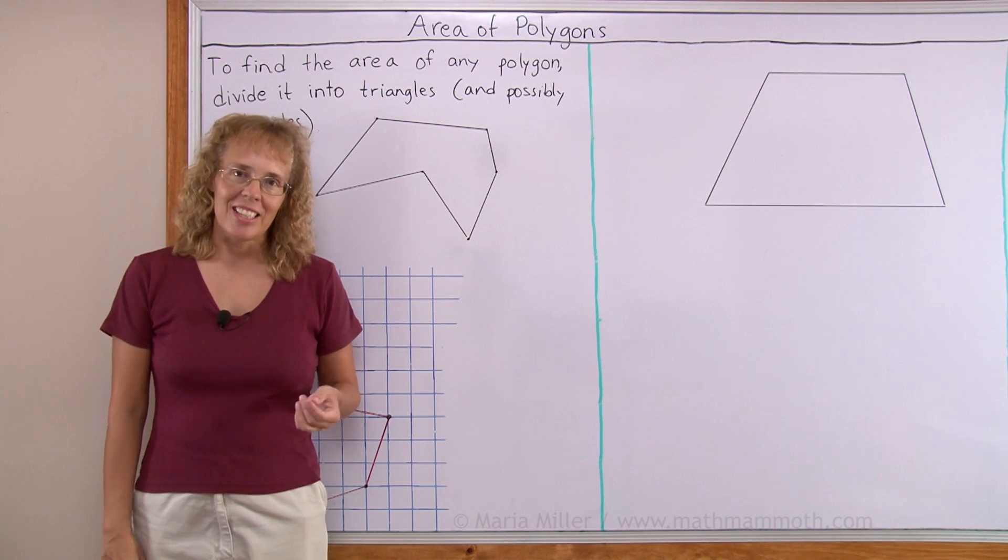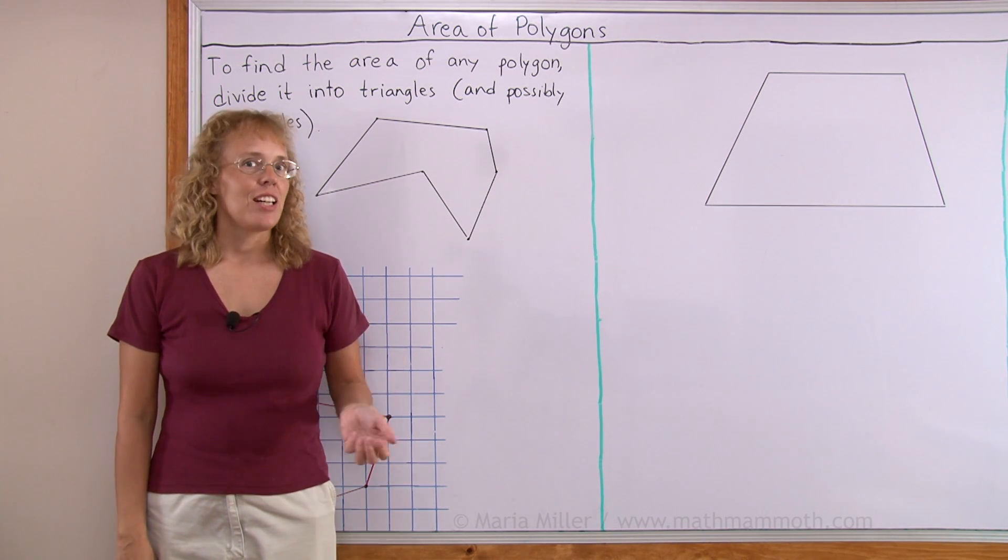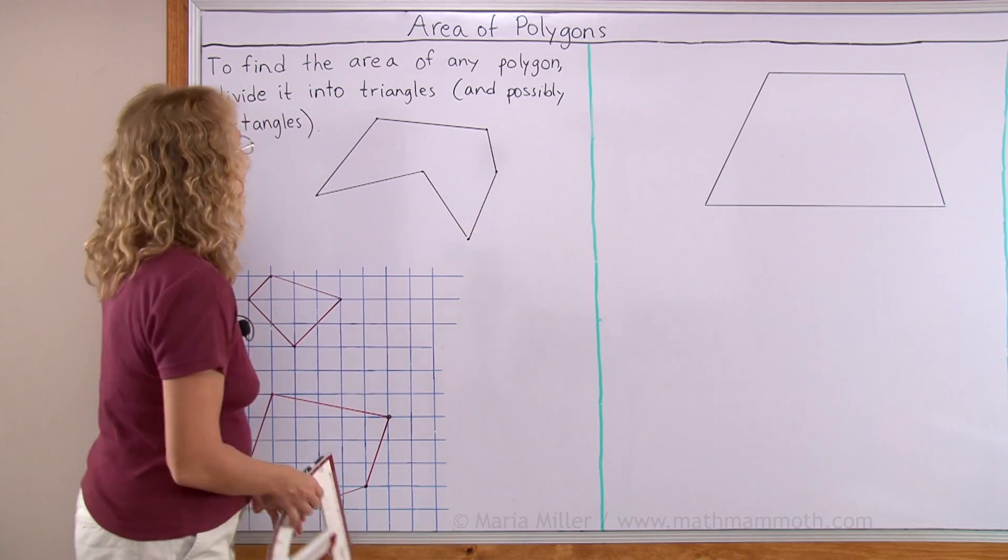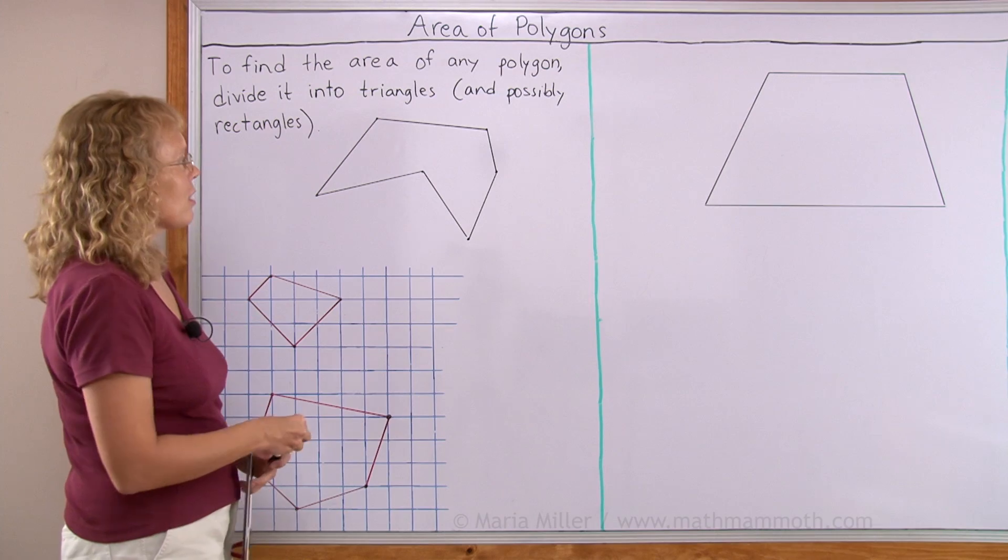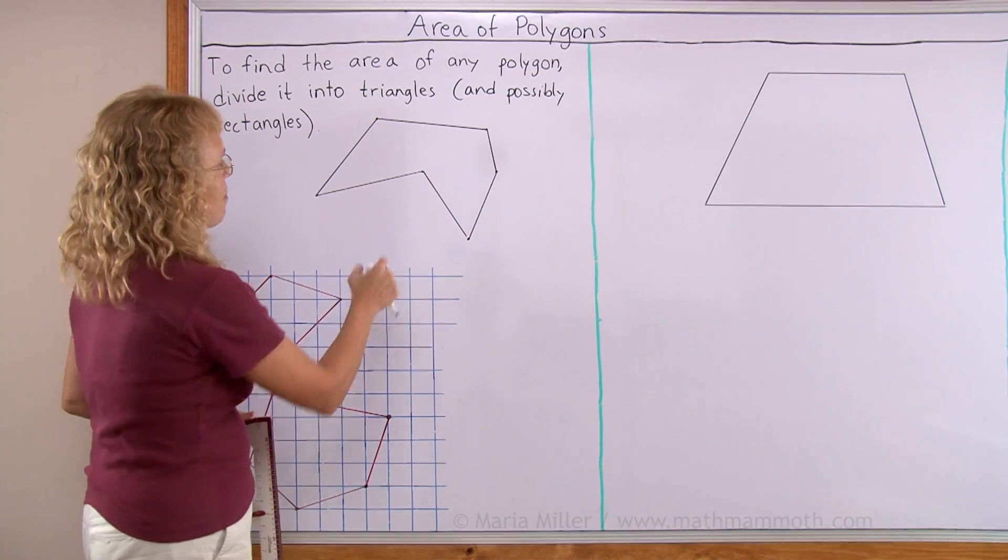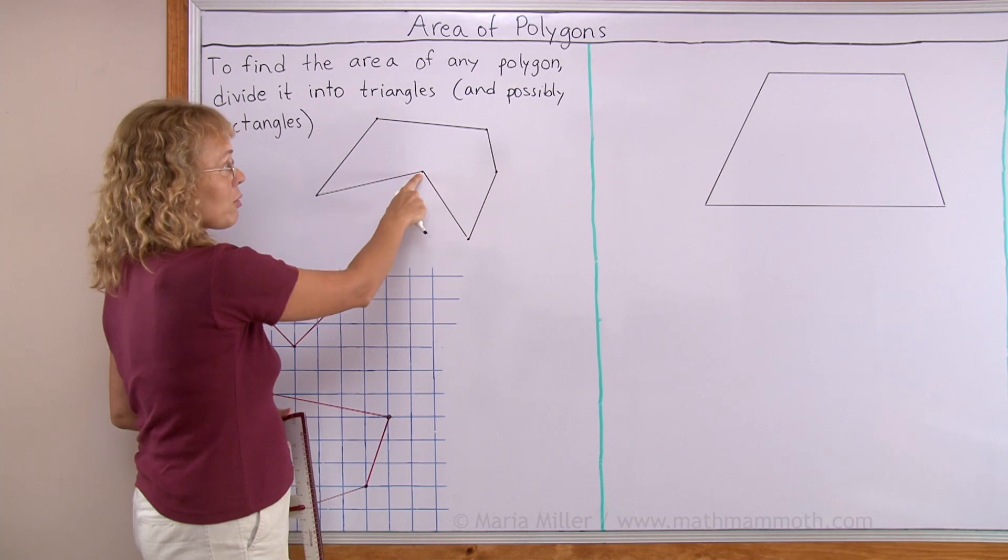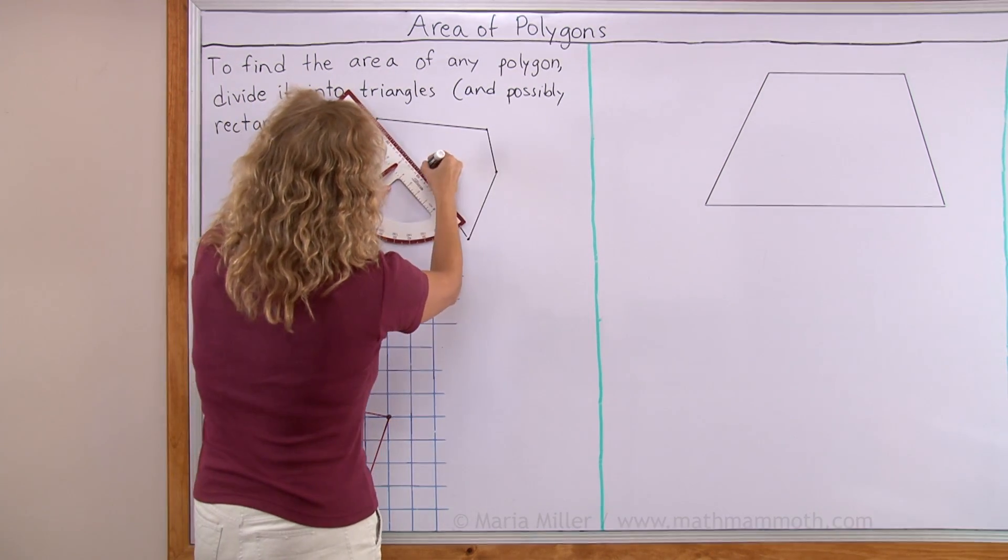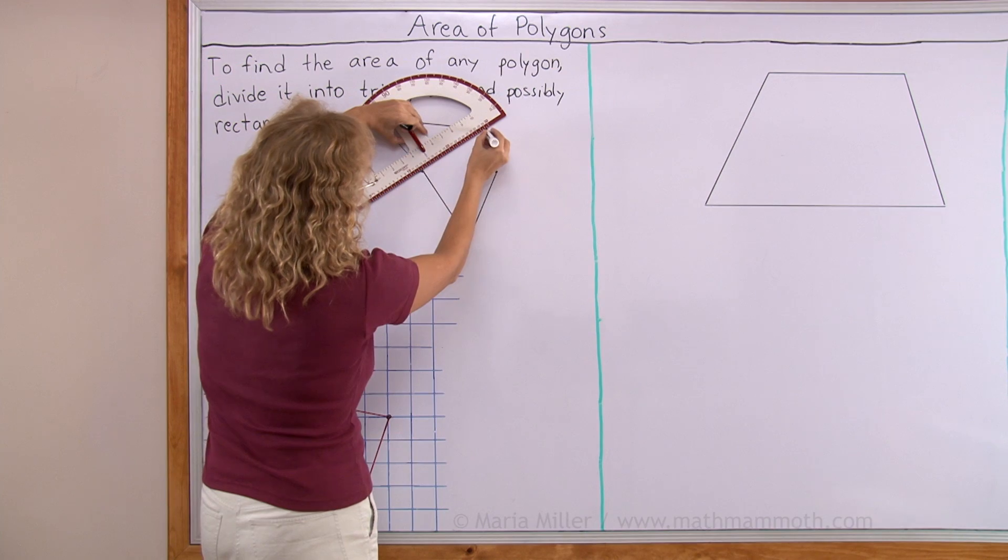All you do is divide it into triangles and find the area of each triangle and then add those areas. So for example if I have this strange looking shape I divide it into triangles by drawing diagonals from vertex to vertex. In a polygon you can always do that.